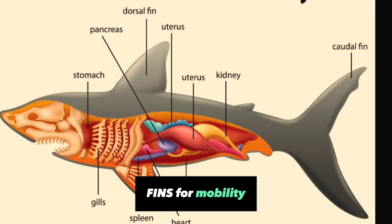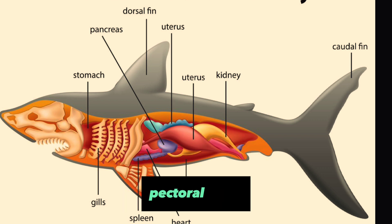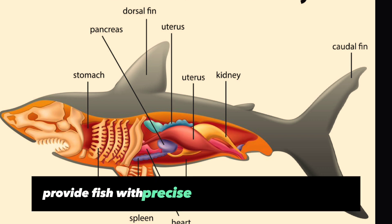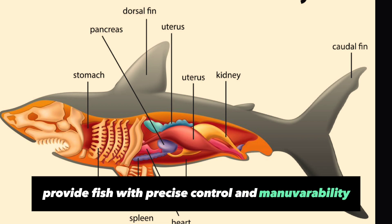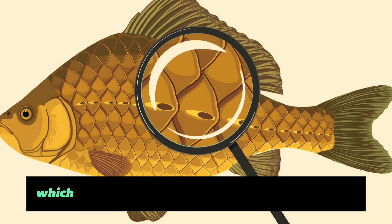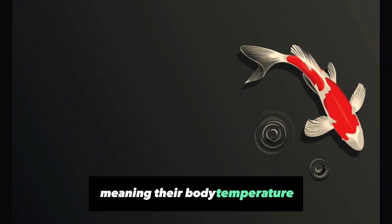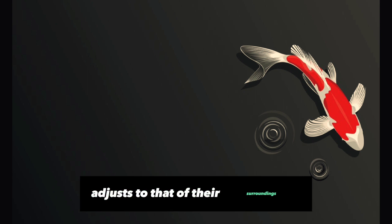Fins for Mobility — fins, including dorsal, pectoral, pelvic, and caudal fins, provide fish with precise control and maneuverability. Scales — most fish are covered in scales, which protect their bodies and contribute to buoyancy. Cold-blooded — fish are cold-blooded, meaning their body temperature adjusts to that of their surroundings.